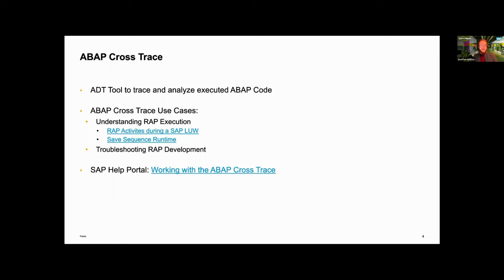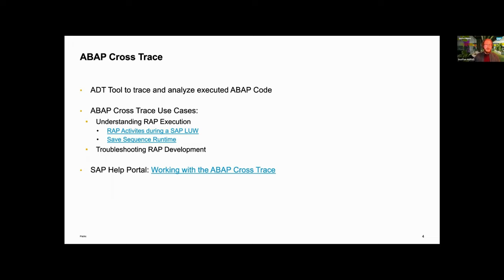In combination with the very nice documentation in the SAP help portal, you can search for 'activities during a SAP LUW or save sequence runtime' — there you'll find a great entry site and runtime diagrams where you can learn more about the orchestration in your RAP stack. With those two tools — ABAP Cross Trace and the generic documentation — you can get a deep understanding of how ABAP code works together. That's the first big use case.